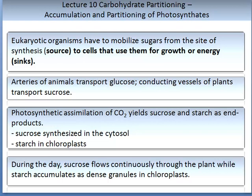These are the products from the carbon fixation of photosynthesis. Eukaryotic organisms have to mobilize sugars from the site of synthesis — what we call the source — to cells that use them for growth or energy, and we call these sinks. Arteries of animals transport glucose, whereas the conducting vessels of plants transport sucrose. Photosynthetic assimilation of carbon dioxide yields sucrose and starch as end products. Sucrose is synthesized in the cytosol, while starch is synthesized in the chloroplast.